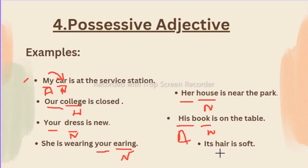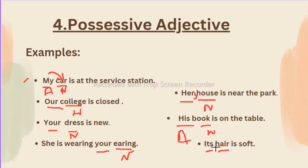Its hair is soft — 'hair' is the noun and 'its' is the possessive adjective. Remember, there is a slight difference between possessive adjective and possessive pronoun. With possessive pronouns we add 's' — 'hers,' 'ours,' etc. We cannot say 'hers house' because after a pronoun we can't use a noun again. His book becomes 'this book is his.' Our college becomes 'this college is ours' by adding 's.'